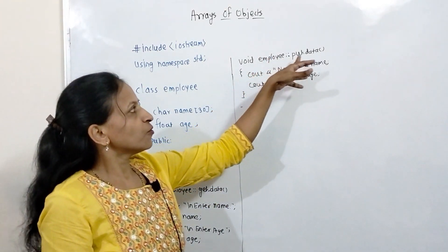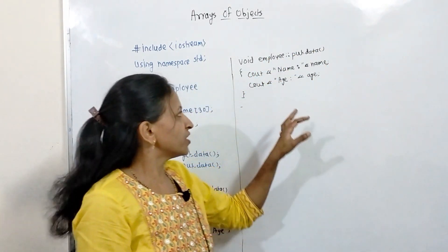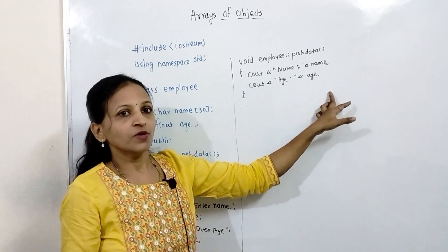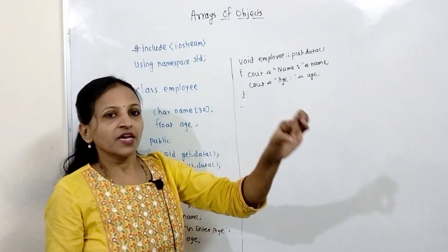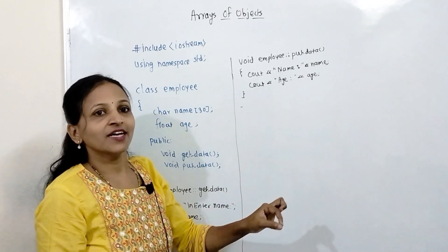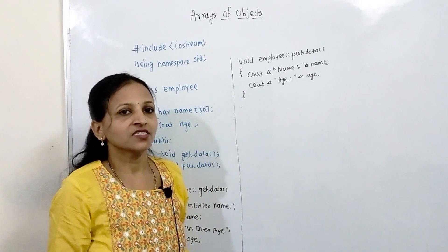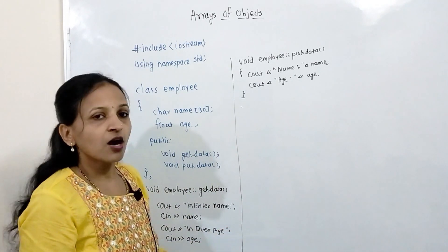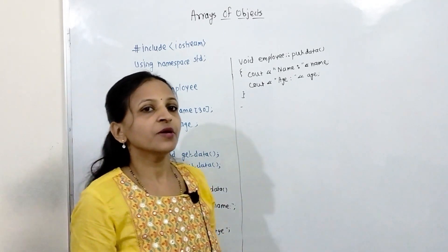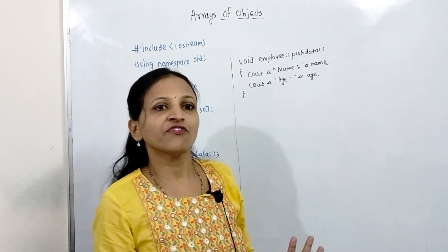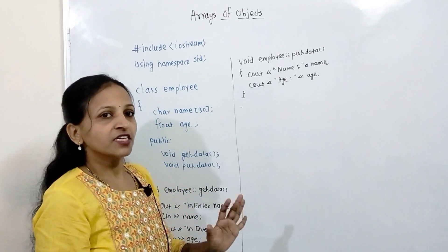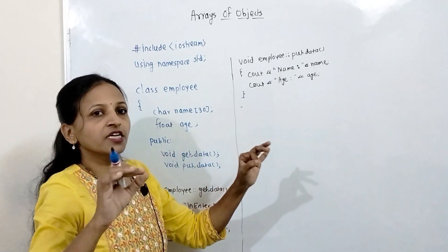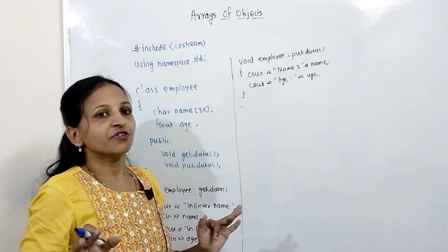In the same way, the putData member function is defined to display name and age. Now in main, we will create an array of objects because we want to accept and display data about 5 employees.